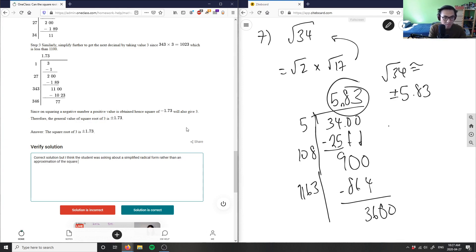So the square root of 34 cannot be simplified. That's okay.